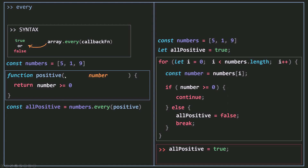Be careful: if, for example, the second element was a negative number, every will call the function on five — five passes — then call it on the negative number. When that doesn't pass the test, every will not call your callback on the next one. It just stops there. If I run this code and log allPositive, it's going to be set to true.